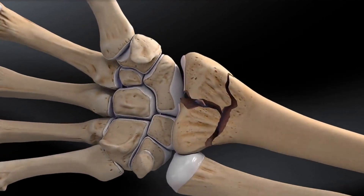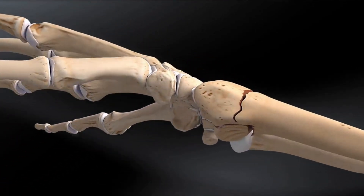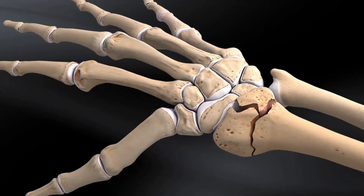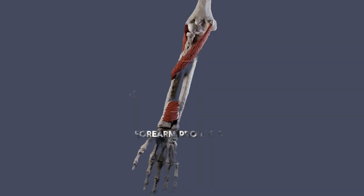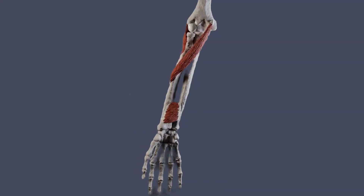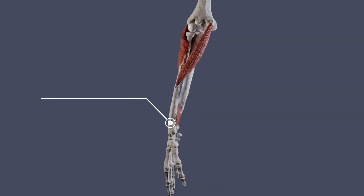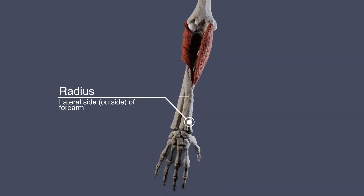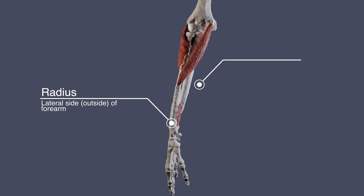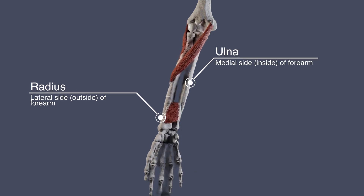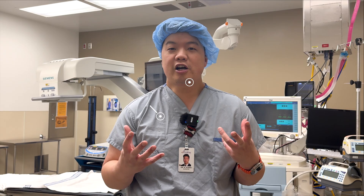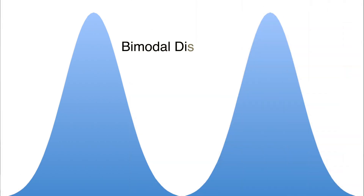A distal radius fracture is a fracture of the radius, which is one of two bones in the forearm. This is the larger bone on the thumb side, or outside, of your wrist. It happens in the distal part, which means the part closest to the wrist. There's something called a bimodal distribution, meaning there are two times in your life when you're likely to get this fracture.